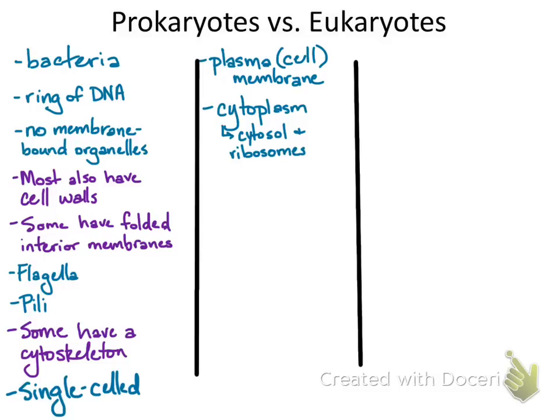Eukaryotes are a bit more complicated, but they have the same basic purposes: storing genetic material, producing and distributing proteins, converting energy through metabolism, communicating with other cells, and moving or staying anchored in place depending on the needs of that cell. To quickly compare them to prokaryotes, they also have a plasma membrane, cytoplasm, and ribosomes.